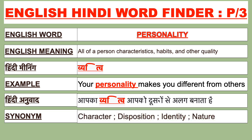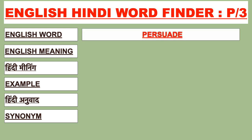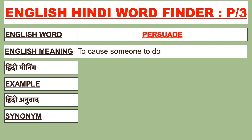Synonyms of personality are character, disposition, identity, and nature. Our next English word is 'persuade'. The English meaning of persuade is to cause someone to do something. Persuade ka Hindi meaning hai 'raji karna'.